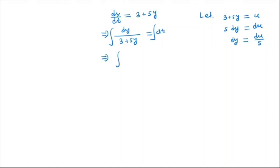So here we have du/5 and 3 + 5y is nothing but u. And on the right-hand side, integral dt is nothing but t + c. So on the left-hand side we have (1/5) ln u = t + c.